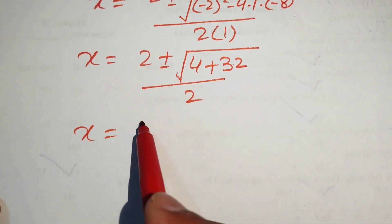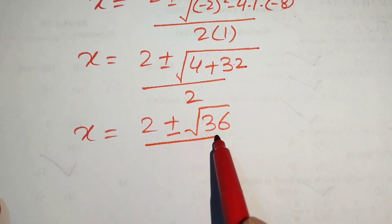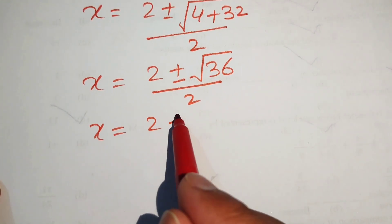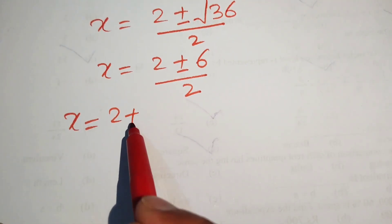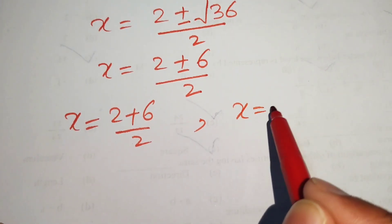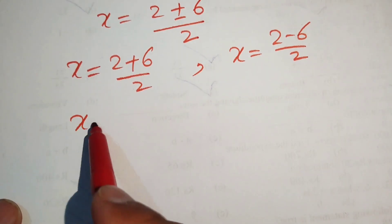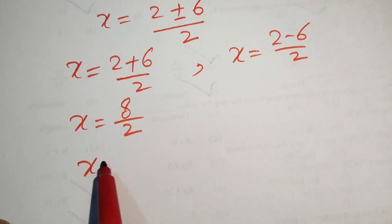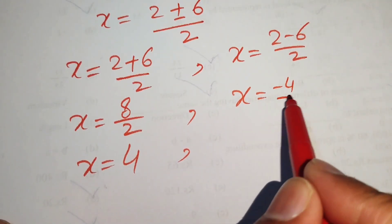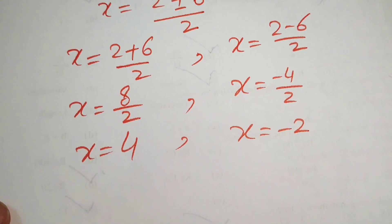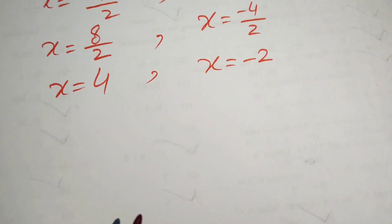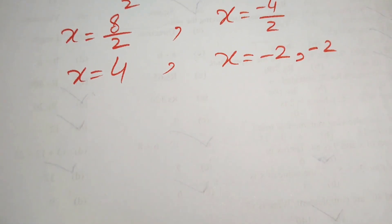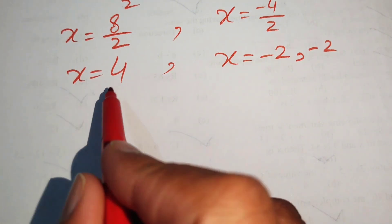This gives x equals (2 plus or minus square root of 36) divided by 2, which is (2 plus or minus 6) divided by 2. Taking the plus sign: x equals 8 over 2 equals 4. Taking the minus sign: x equals minus 4 over 2 equals minus 2. So x equals minus 2 is a repeated value; the distinct values are x equals 4 and x equals minus 2.